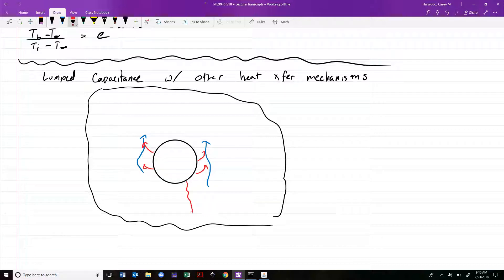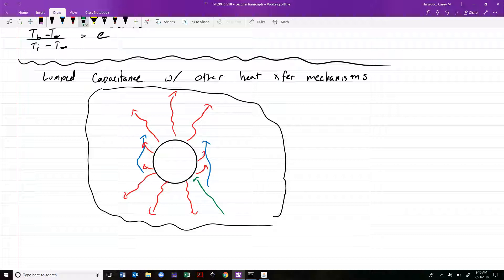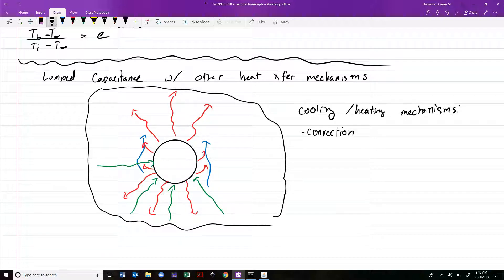Remember in chapter one we talked about radiation as being another important factor in heat transfer. So besides convection, there's also going to be radiation in the form of emission or emitted power away from the object and incident power or irradiation coming in from the boundaries here. We have cooling or heating - mechanisms at play include convection and radiation.